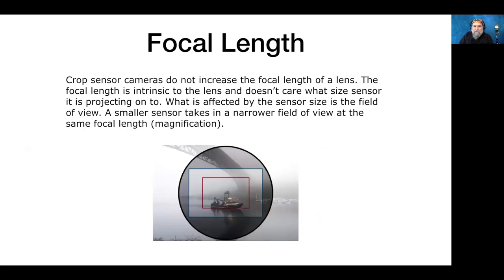Some people get confused about focal length on smaller sensor cameras like APS-C and Micro Four Thirds. The cameras do not increase the focal length of the lens — the smaller sensor just sees less of the image projected by the lens. It has a narrower field of view, showing less of the surrounding edges. The smaller sensor did not make the lens any longer; it just shows you less of the scene.